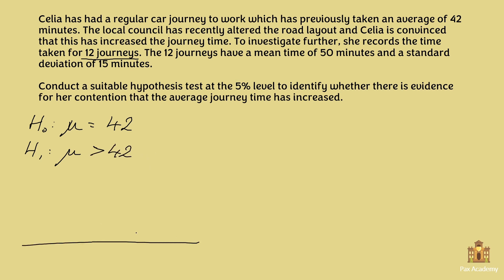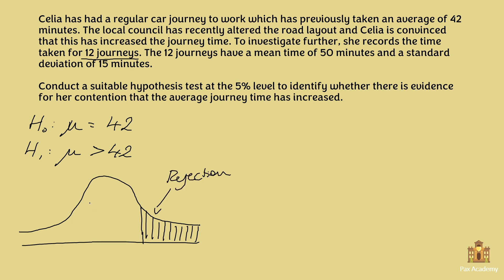Let's draw the distribution. This is a one-tailed test because the only possibility in the alternative hypothesis is that it's higher than 42. Because we believe it might be higher than 42, the rejection region is on the right-hand side. The rest of the area is 0.95 and the rejection area is 5%, so 0.05.